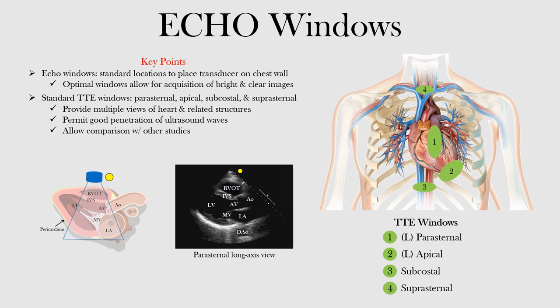Echo windows provide standard locations where we place the transducer on the anterior chest wall that allow for areas of the heart to be seen. In this lecture we're going to be looking at the various positions we place the transducer in order to obtain various views of the heart. These echo windows are standardized because they allow optimal views to acquire bright and clear images. There are four main windows we'll discuss.